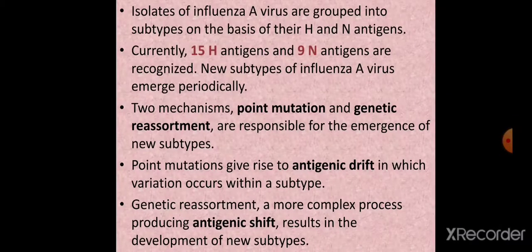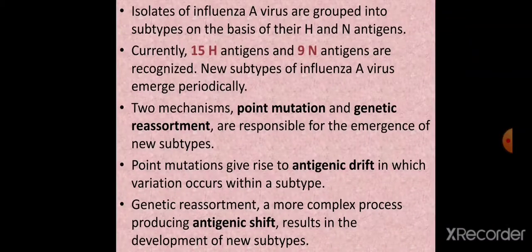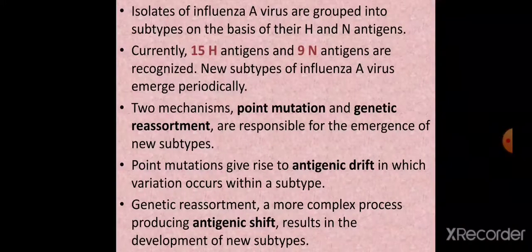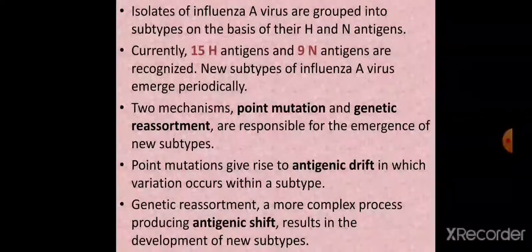Currently, there are 15 H antigens and 9 N antigens recognized. This is a very important point for your objectives. New subtypes of influenza A viruses emerge periodically, and two mechanisms are responsible: point mutation and genetic reassortment.